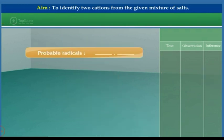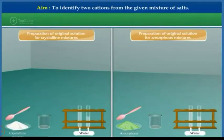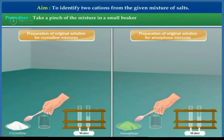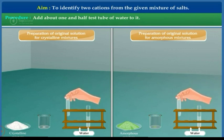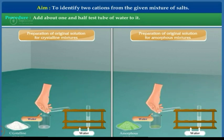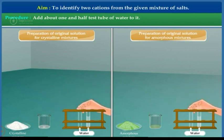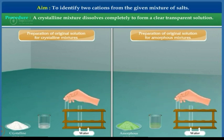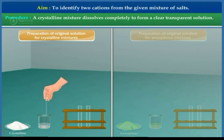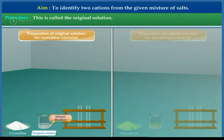Probable radicals: The probable radicals of the mixture are listed from the positive inferences of the dry test. Now we shall prepare the original solution of the mixture to perform the wet test. Take a pinch of the mixture in a small beaker and add about one and a half test tubes of water to it. A crystalline mixture dissolves completely to form a clear transparent solution, called the original solution.